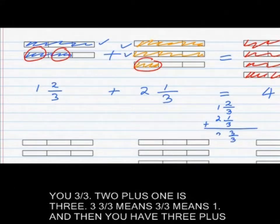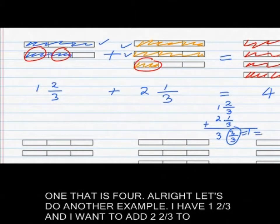One and two-thirds plus two and one-third gives you three-thirds. Two plus one is three. Three-thirds means one whole. And now you have three plus one, which is four.